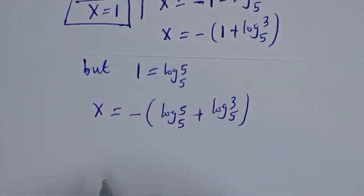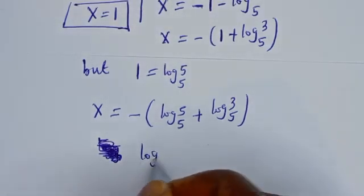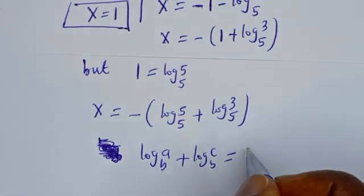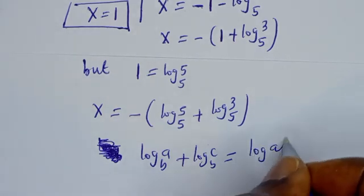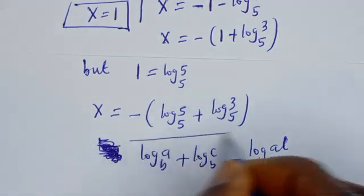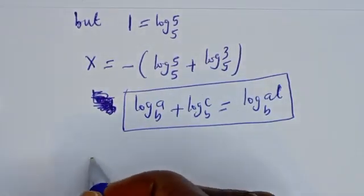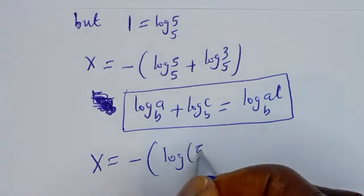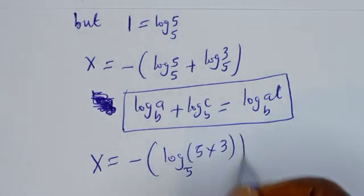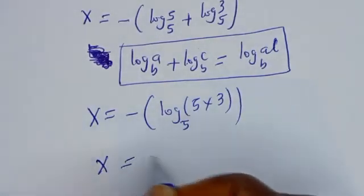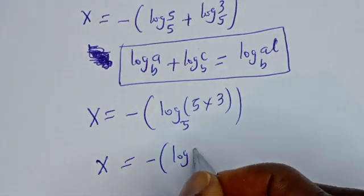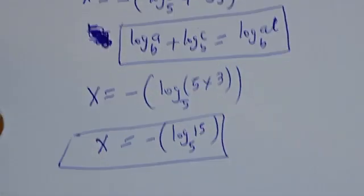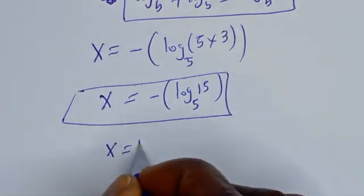Take note: if you have log a base b plus log c base b, this equals log(ac) base b. Applying this rule: s = −(log₅(5) + log₅(3)) = −log₅(5 × 3) = −log₅(15). So the second value of s is −log₅(15).